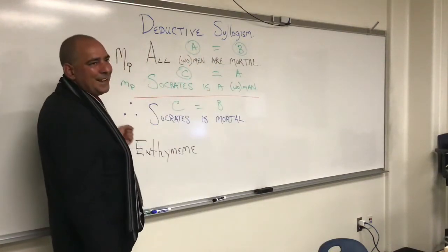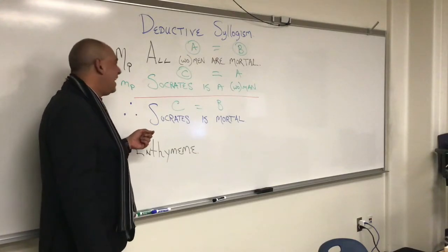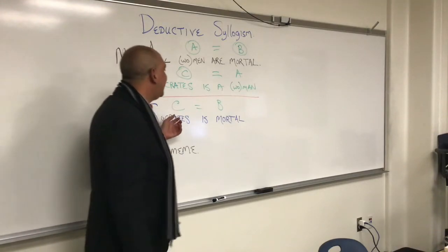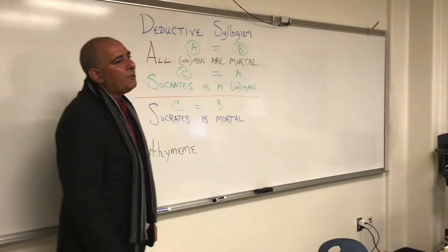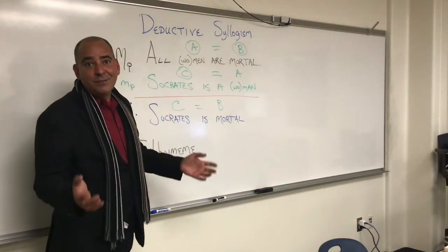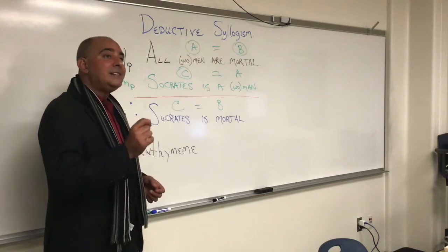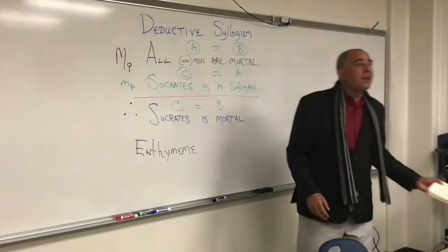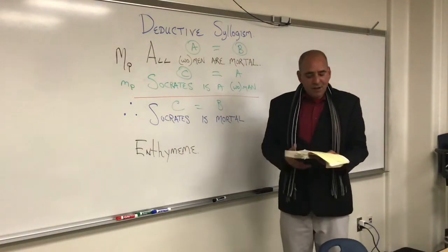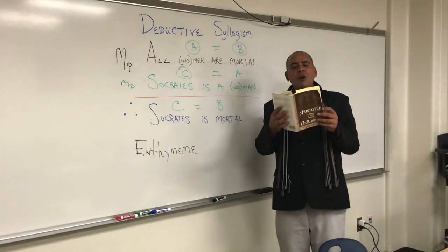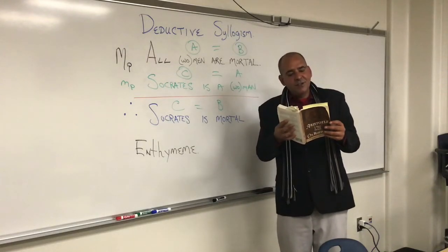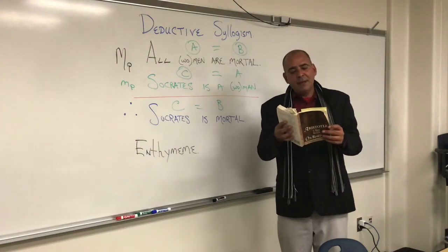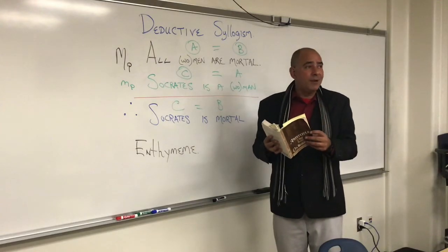Therefore — remember these three dots? — Socrates is in fact mortal, or if we were to put it mathematically, C is in fact equal to B. Now, laying out the entire syllogism oftentimes is pretty boring. Even Aristotle talks about it. He says usually what we do is we tend to put referential objects inside of the syllogism so that one of these areas can just be replaced. For example, he says that when Dorius has won the contest with a crown, it is enough to have said he has won the Olympic Games, and there is no need to add that the Olympic Games have a crown as the prize, for everybody knows that.